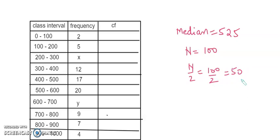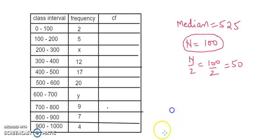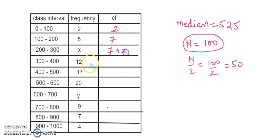Looking at the question, we have two unknown frequencies, which means we will end up with two linear equations with x and y. We use the total frequency to get one equation. Making the CF: the first frequency goes as is, 5; then 5 plus 2 is 7; then 7 plus x; then 12 plus 7 is 19 plus x; then 19 plus 17 is 36 plus x; then 56 plus x.